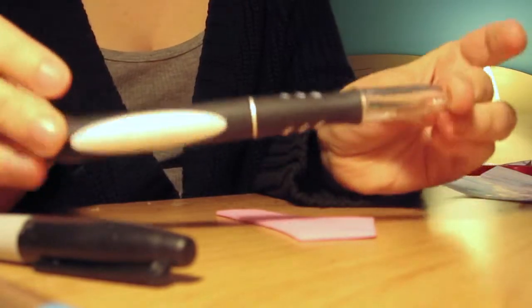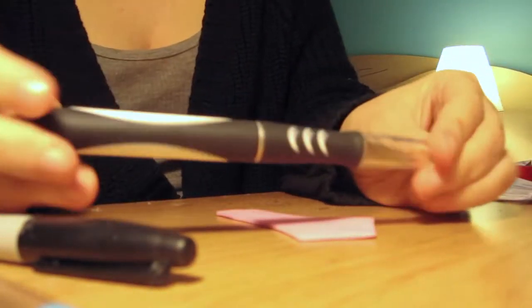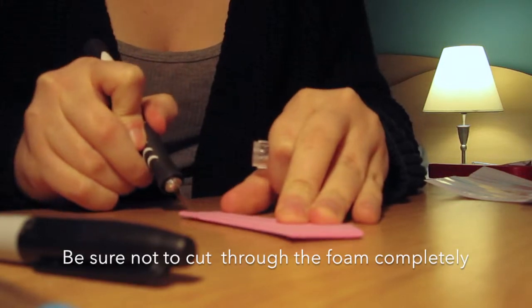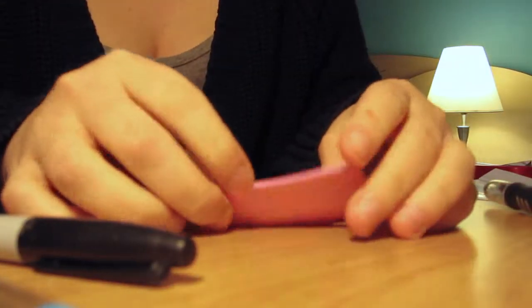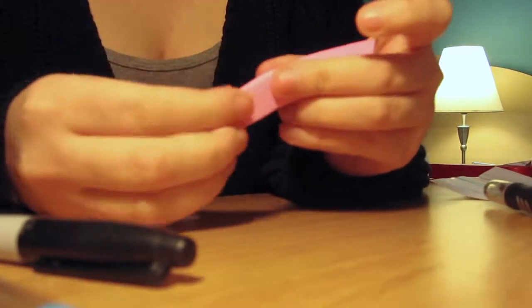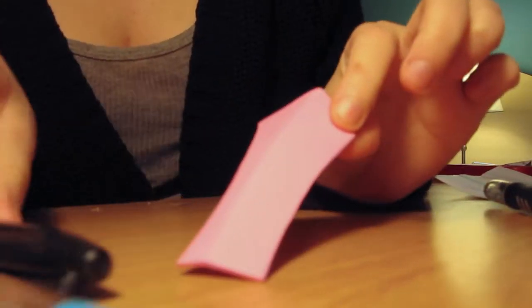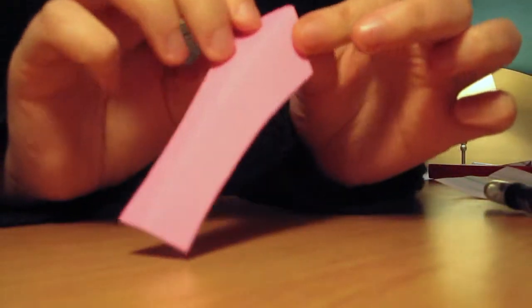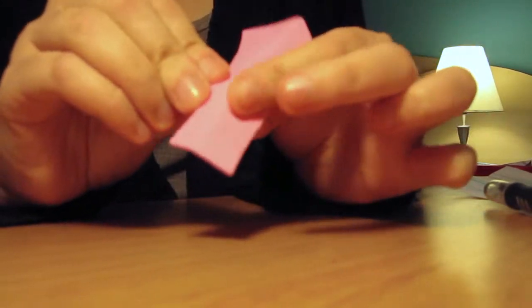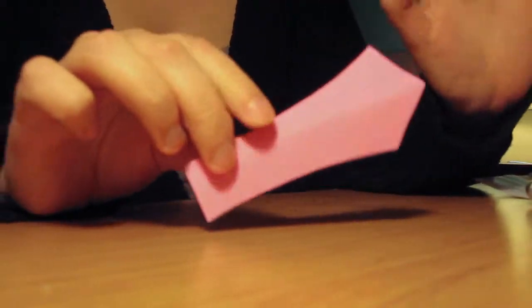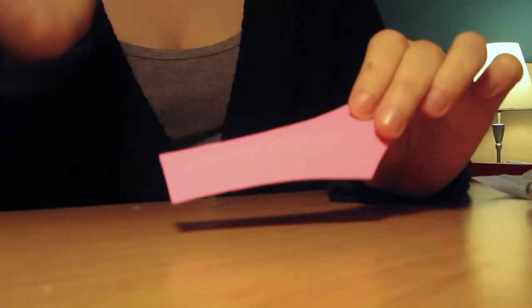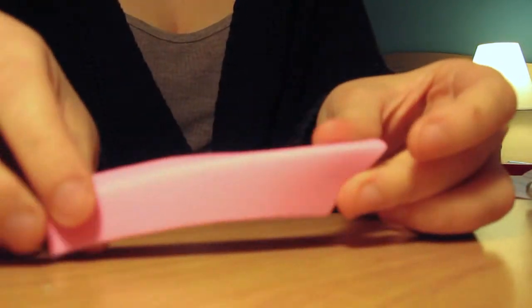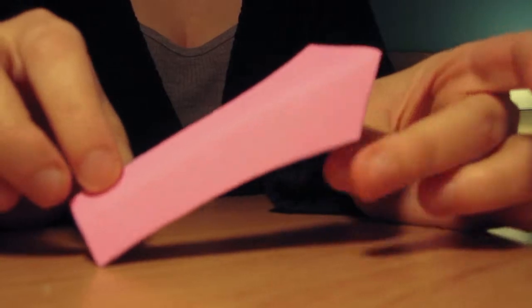This is where the dull exacto knife comes in. You're gonna take it and run it along that line that you made. What this does is it makes it easier to fold and defines where you want the bevel to be. As you can see here, because I drew that line and cut it out in the back a bit with the exacto knife, it made a line that it will go along rather than just folding it freehand. Once you get this general shape, you can see it already has the beveled look and the metal feather look.